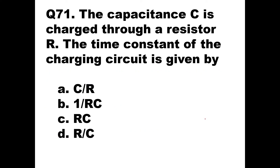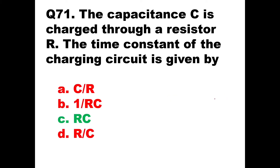Question number 71: A capacitor charged through a resistor R — what is the time constant of the charging circuit? In an RC circuit, the time constant is given by the product R×C. Option C is the right answer: R×C gives the time constant for the charging circuit.